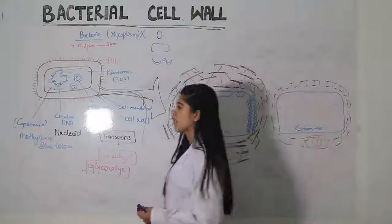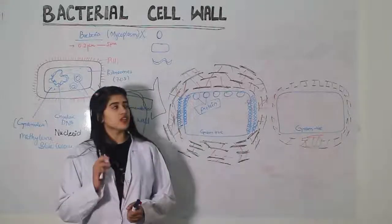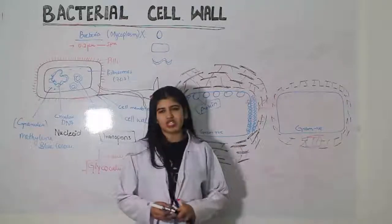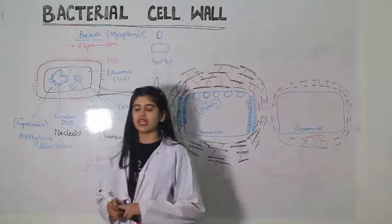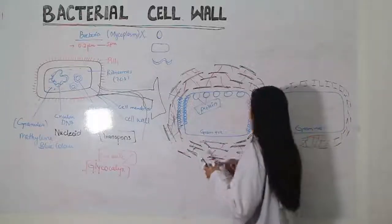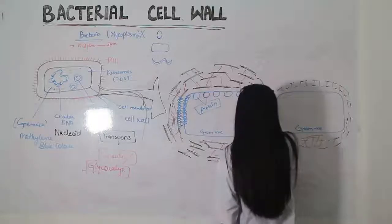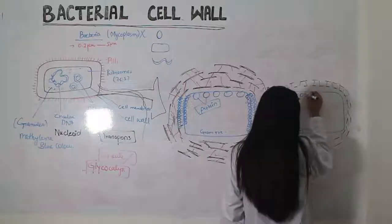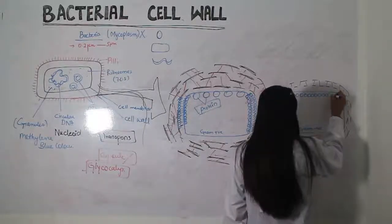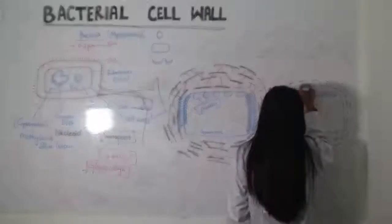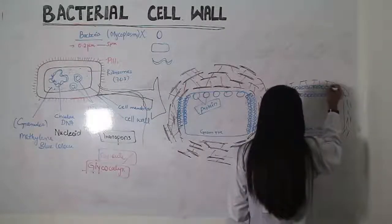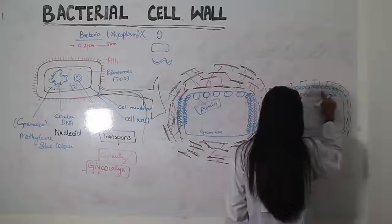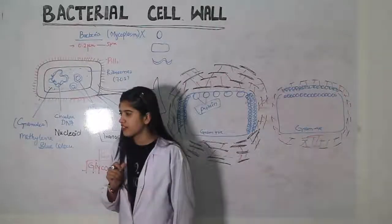Gram positive bacteria have a thick peptidoglycan layer; gram negative bacteria have a very thin peptidoglycan layer. The question remains: what is the difference between the plasma membrane of bacteria and that of a normal human cell? Think about one key difference between these two cell membranes.